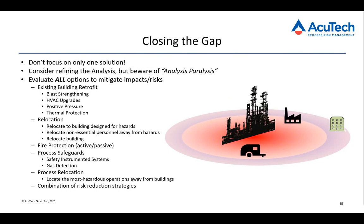Now we've got our results, we need to do something about them. We need to close any gaps that are identified and take a look at those opportunities for improvement. One thing to be careful of is not focusing on only one solution. If you put your blinders on, you might be missing something — the one solution might not cover everything. If it's a solution for blast, it might not be addressing the toxic ingress hazard or the fire thermal radiation hazard. But also, sometimes there are several lesser solutions that together come up with a better single solution than if you were only looking at that one big solution.